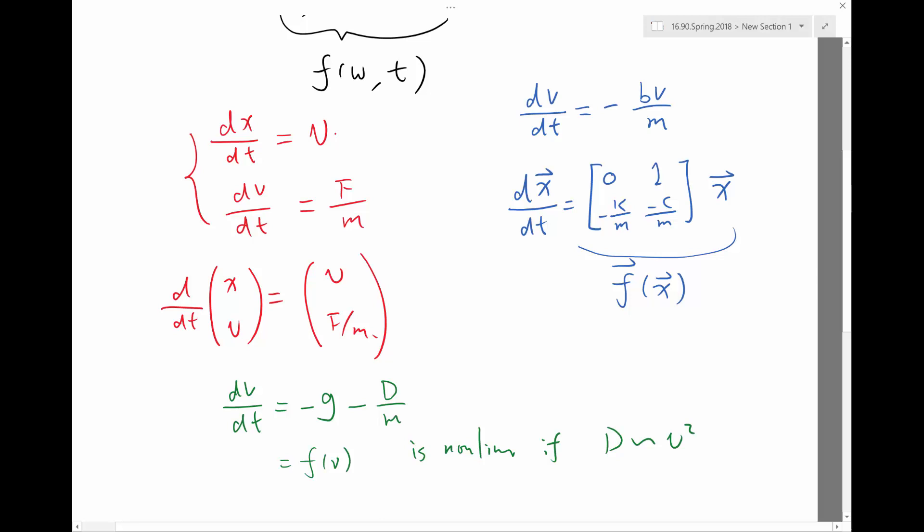Like if F doesn't depend on anything, it's linear. If F depends linearly on position and velocity, again, it's linear. If F involves something like aerodynamic drag, then it is going to be non-linear.